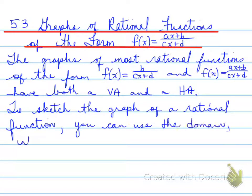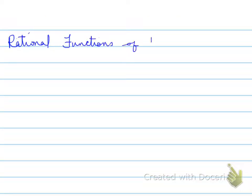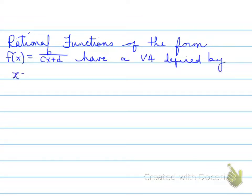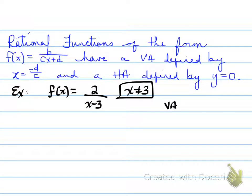To sketch the graph of a rational function, you can use the domain, intercepts, equation of the asymptotes, and positive-negative intervals. Rational functions of the form B over (cx + d) have a vertical asymptote defined by x = -d/c and a horizontal asymptote defined by y = 0.